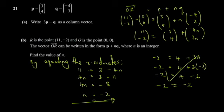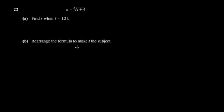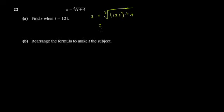The next question: s = cube root of (t + 4). Find s when t = 121. This is substitution. I always advise using brackets whenever substituting — it's good muscle memory. So: s = cube root of (121 + 4) = cube root of 125.